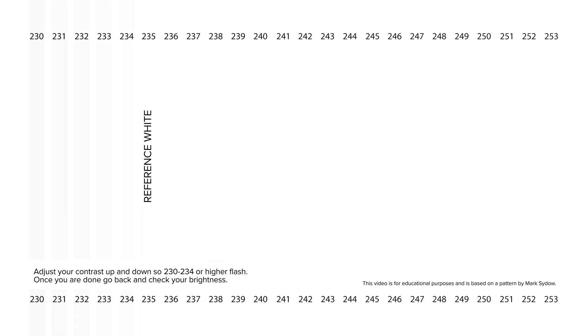Now, let's move on to set contrast. Almost counterintuitively, when you set contrast, you're setting your peak white level — and that's the contrast from your darkest black to your whitest white. We want to set this as high as we can without having your higher whites wash out. So set this so that everything to the left of 235 flashes. You can take it up a little higher as well if you want, but the higher you set the contrast, the more risk you have of washing out detail in the brighter parts of your image.